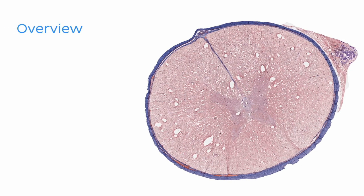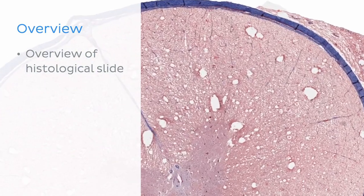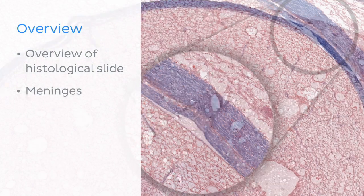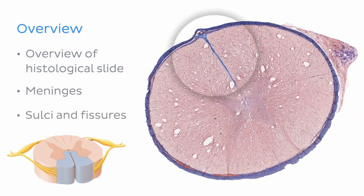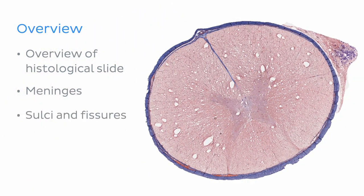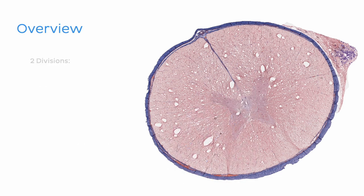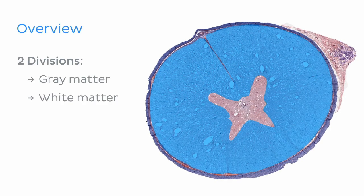What will we actually learn today? We'll start with a general overview of the histological slide of the spinal cord. We'll then move on to learn about the meninges of the spinal cord and its sulci and fissures. Next, we'll look at neurons and their structure, followed by the two divisions of the spinal cord — gray and white matter — and their microscopic composition.